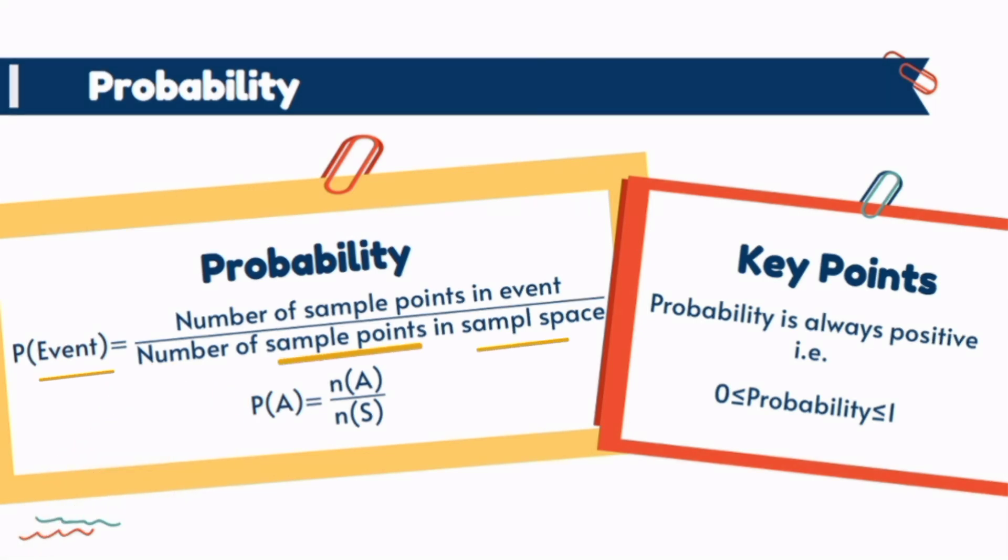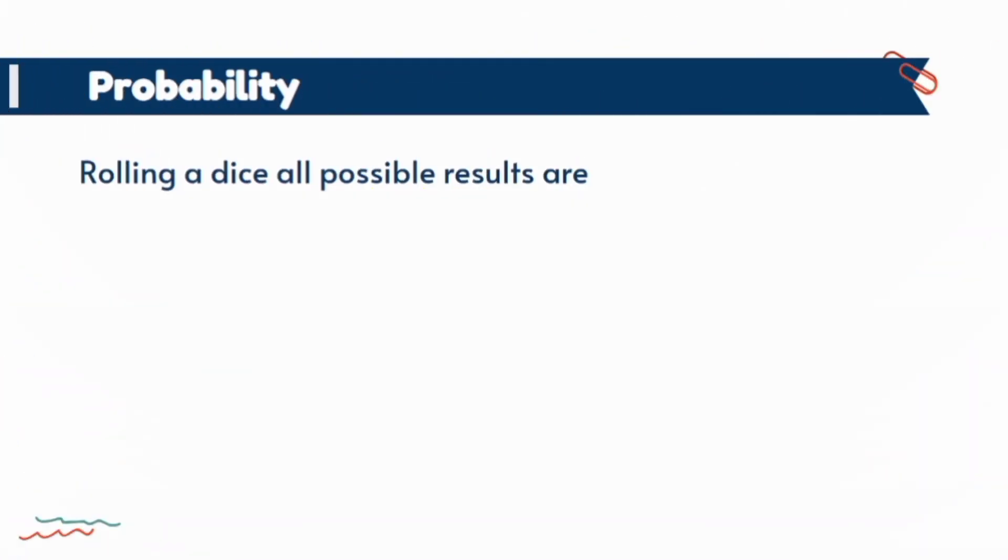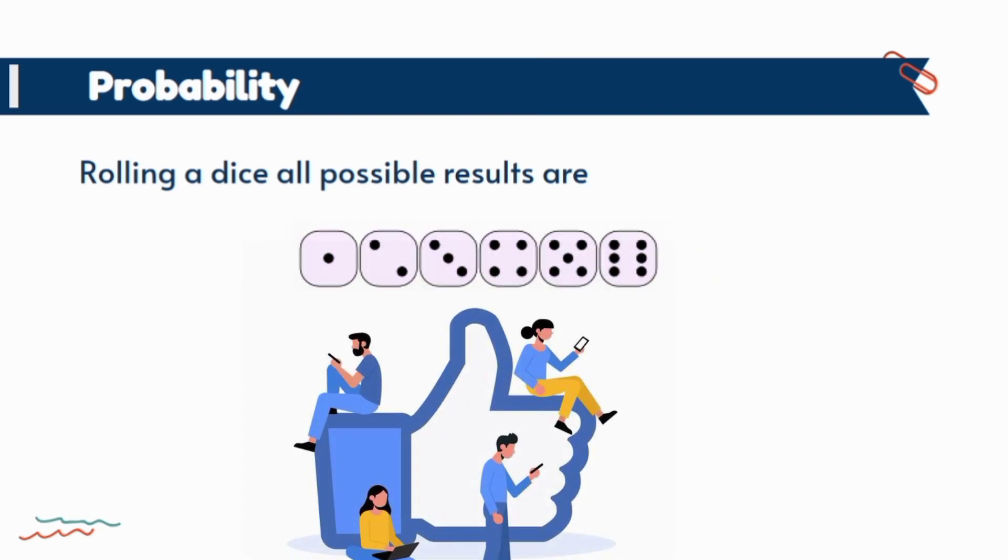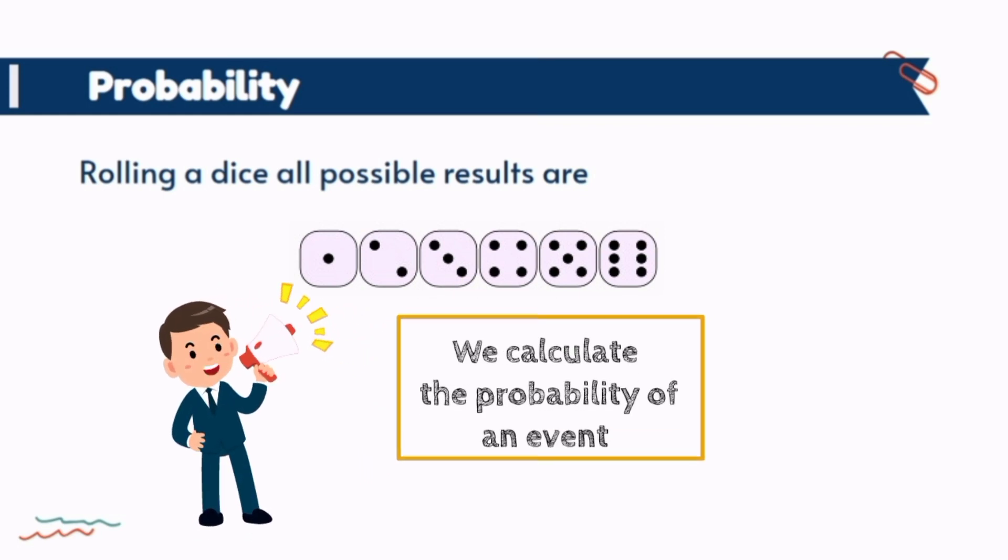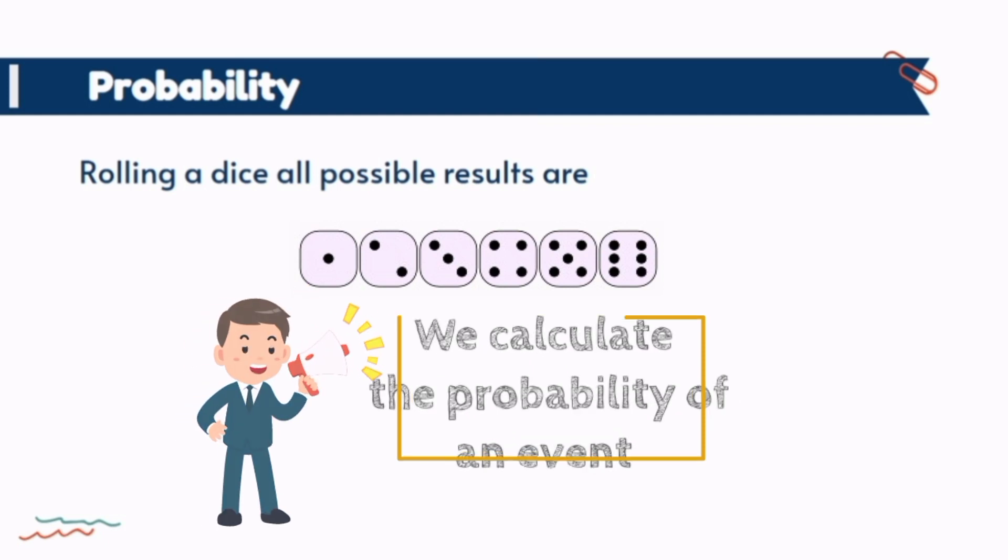To know what actually the event, sample space, and sample points are, let's walk through an example. When roll a dice, all possible results are here. Rolling a dice is an experiment, and sample space is actually the all possible results of this experiment. Elements in sample space are called sample points, and event actually what we desire to occur. Normally event is denoted by capital alphabetic letters A, B, C and sample space by S.